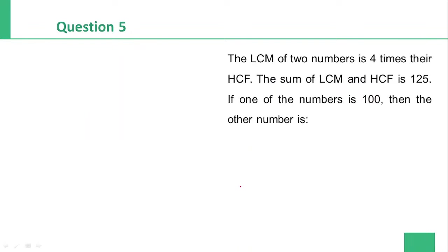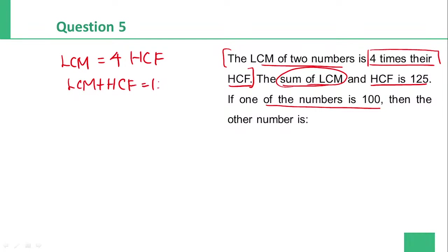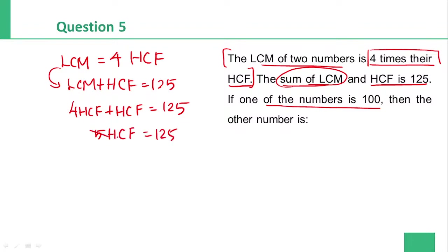Question number 5: LCM of two numbers is 4 times their HCF. The sum of LCM and HCF is 125. One of the numbers is 100. Find the other. From the first statement: LCM = 4 × HCF. Substituting into the sum: 4×HCF + HCF = 125, so 5×HCF = 125, giving HCF = 25.